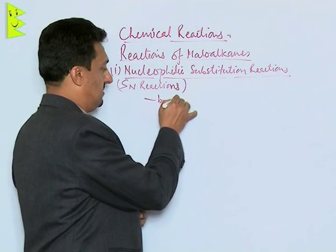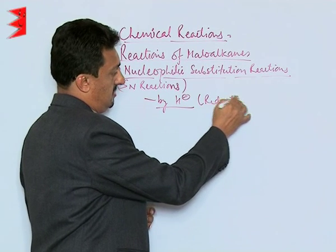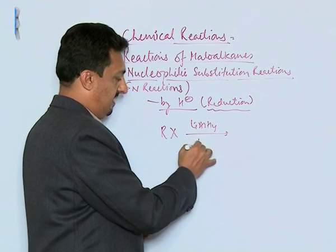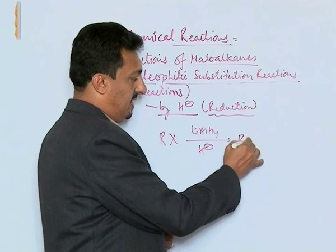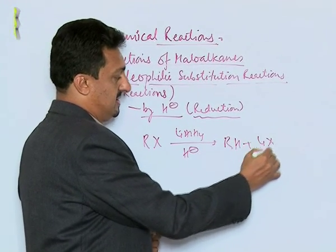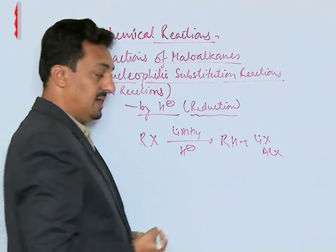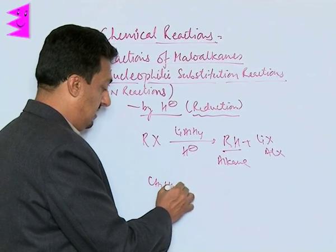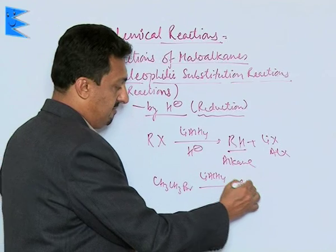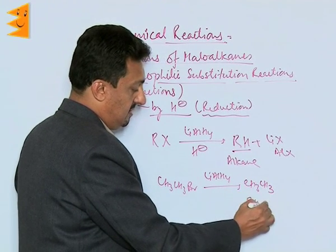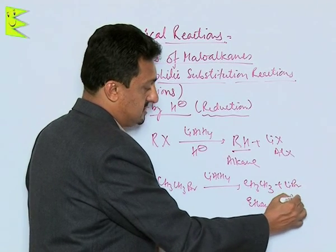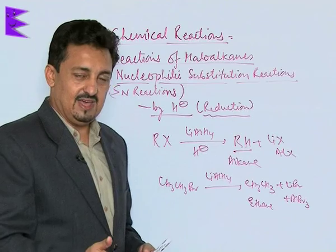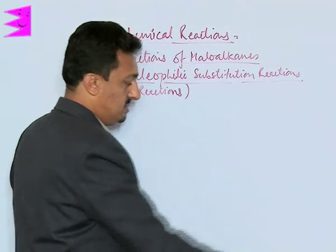We can also do substitution by hydride, which is called reduction. Any alkyl halide reacted with lithium aluminium hydride, which supplies H⁻, gives RH plus LiX and AlX — the corresponding alkane. For example, ethyl bromide reacted with LiAlH4 gives ethane plus lithium bromide and aluminium bromide.